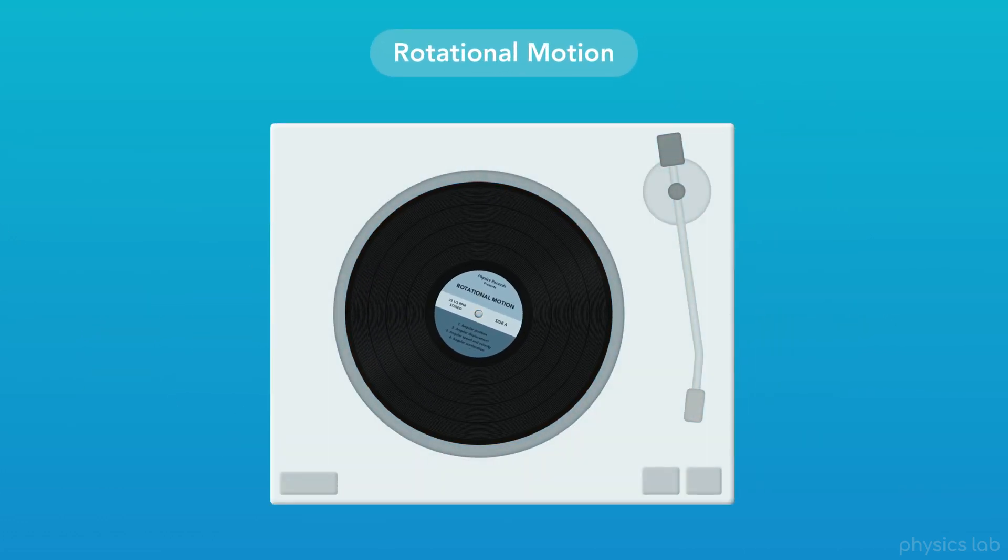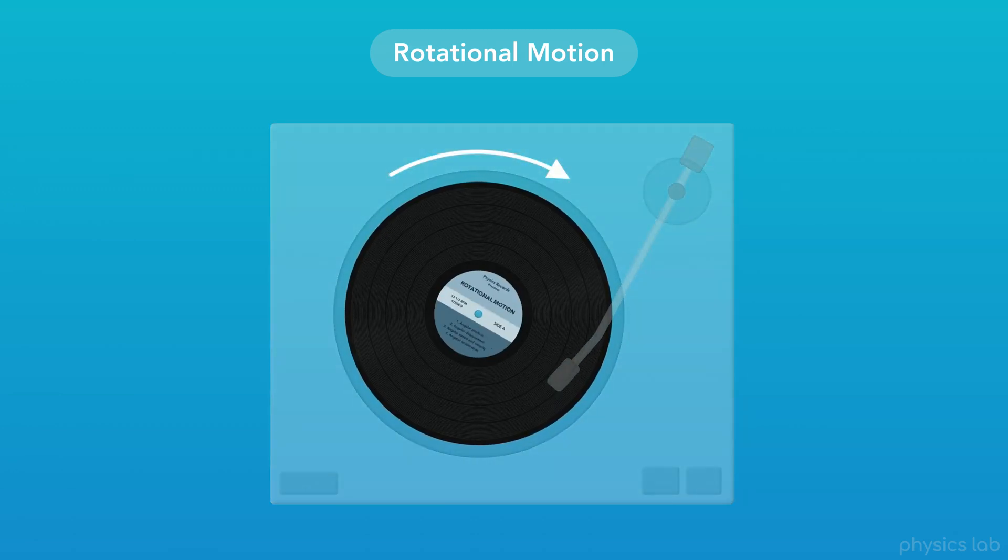This vinyl record is one example. When we say rotational motion, we're not looking at how an object is translating left, right, up, or down. We're only looking at how it's rotating, or spinning.